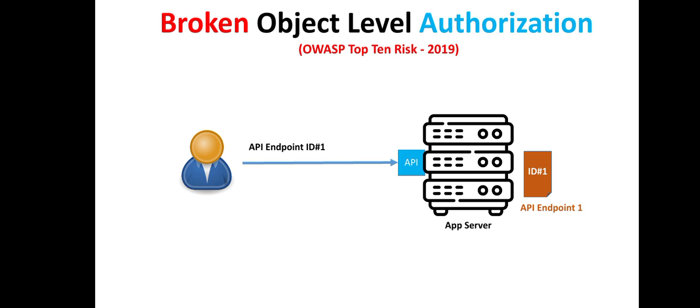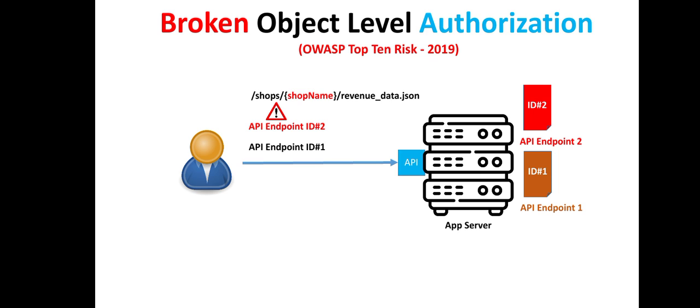If only the API endpoint ID is the authorization mechanism to access the resources of an application server, then any malicious user can manipulate and use a different API endpoint to access a resource for which they don't have authorization. For example, in this URL the shop name can be modified to access the revenue details of different online shops.